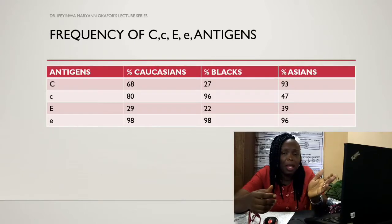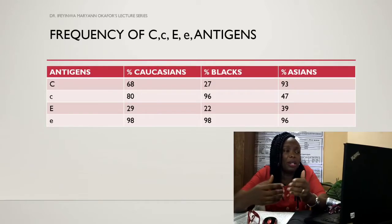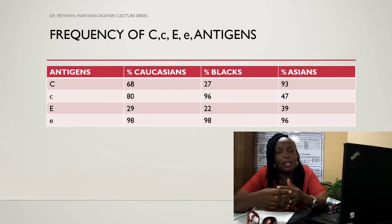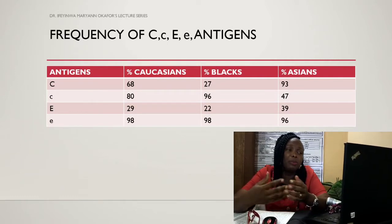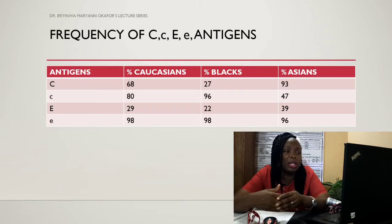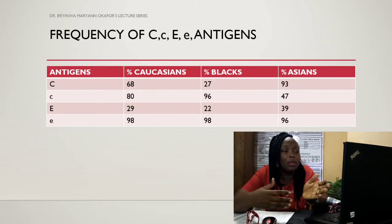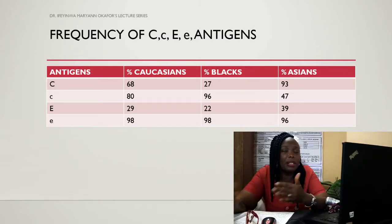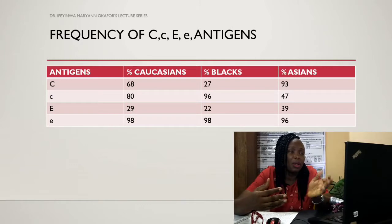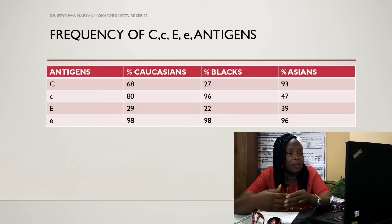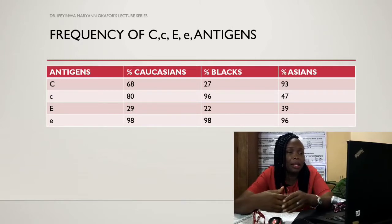Different RH phenotypes express different amounts of D antigen. Studies have also shown that the big C antigen has a depressive effect on the expression of D antigen. The big C, little c, big E, little e antigens reside on the RHCE polypeptide. C is antithetical to little c, and big E is antithetical to little e. The difference between the C protein and the little c protein is just four amino acids, while the difference between the E protein and the little e protein is just one amino acid. These antigens are less immunogenic than D antigen, with an immunization rate of 1 to 3 percent compared to D.